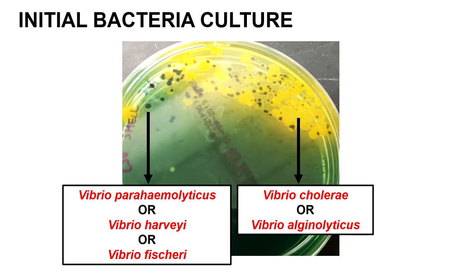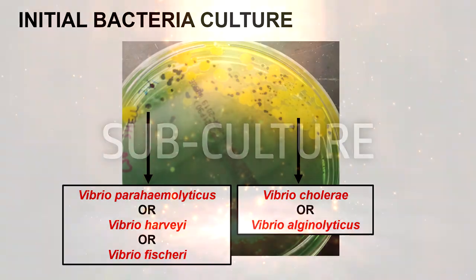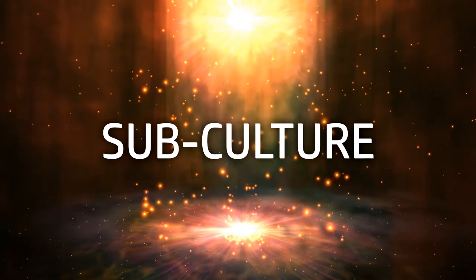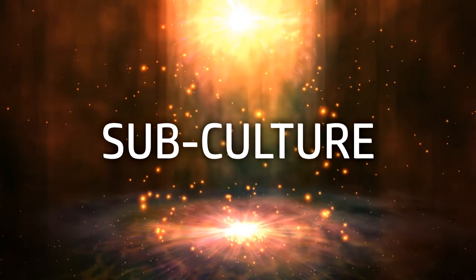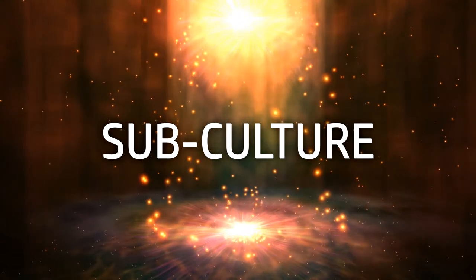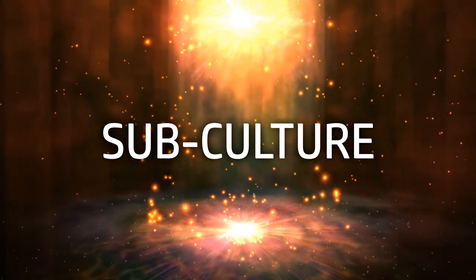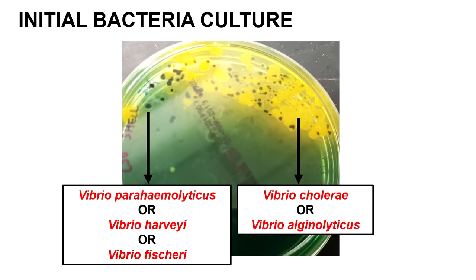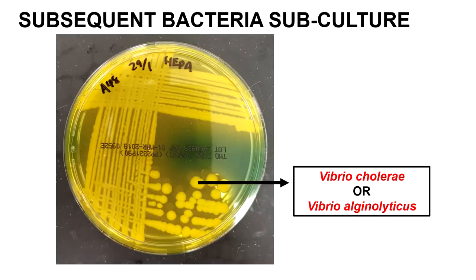This means that these strains of bacteria are present in the crab of interest. If you are interested in isolating the yellow colonies, you can perform a subculture by inoculating another TCBS plate with bacteria obtained from those yellow colonies. After 24 hours of incubation, you will get a pure culture of either Vibrio cholerae or Vibrio alginolyticus.